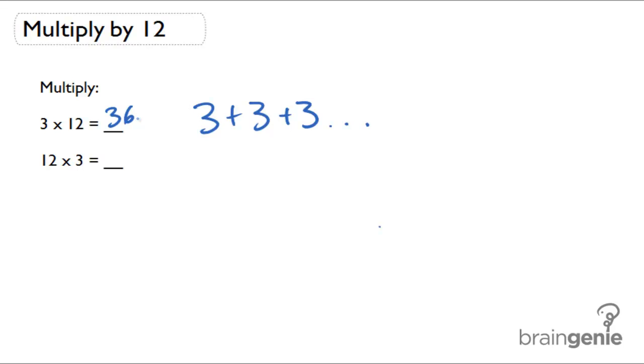But another way to look at it is if you take 12 times 3, that means you are adding 12 three times. So 12 plus 12 plus 12. 12 plus 12 is 24, and 24 plus 12 is going to give me 36.